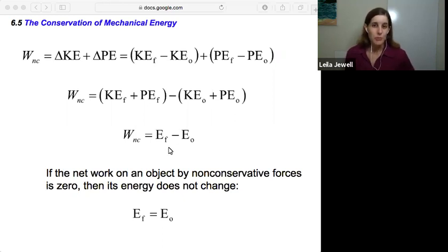Where this becomes really interesting and especially powerful is if you can identify that the net work on an object by non-conservative forces is zero, then the energy does not change. So if W_nc is equal to zero, then we would add the initial energy to the other side and we'd see that the final total energy is equal to the initial energy because there's nothing to change the total energy in the system.